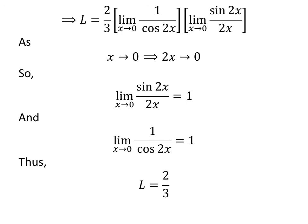So the above statements give us L is equal to 2 upon 3. Therefore the limit of tangent of 2 times x upon 3 times x as x approaches 0 is equal to 2 upon 3.